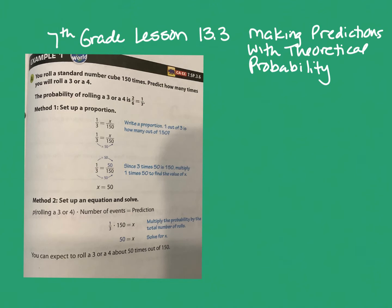Here's the first example: you roll a standard number cube 150 times — predict how many times you will roll a three or a four. A number cube has six sides, so there are six possibilities. Out of those six possibilities, there's one three and one four, so there are only two chances it's going to be a three or a four — two out of six chances.